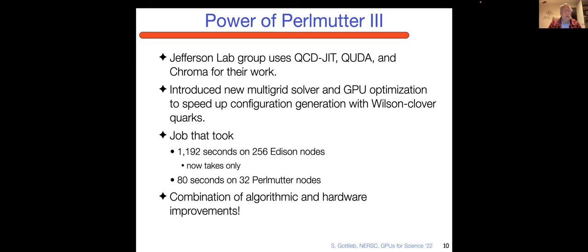The Jefferson Lab Group uses QCD JIT, QUDA and Chroma for their work. They did a new multigrid solver and had some significant algorithmic improvements. A job that took 1,192 seconds on 256 Edison nodes, they were able to run in just 80 seconds on 32 Perlmutter nodes. It's a combination of the hardware being much faster and the algorithm being improved.